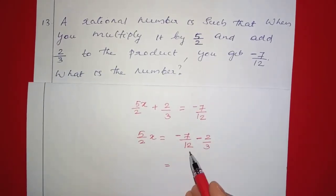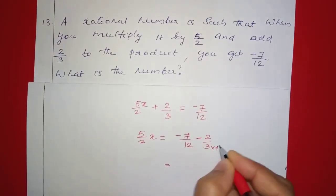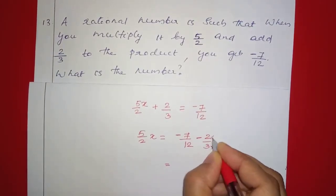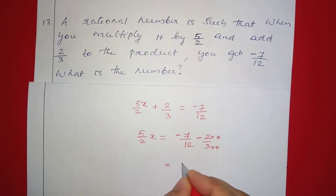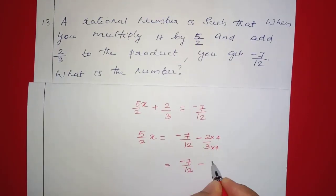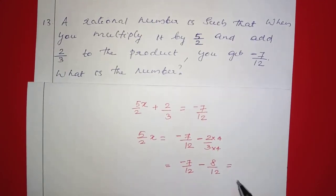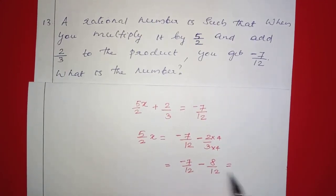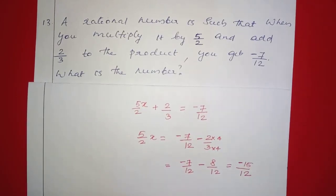We have different denominators, so we find a common denominator. 3 into 4 gives 12. The numerator becomes: negative 7/12 minus 2 times 4, which is 8/12. So negative 7 minus 8 gives negative 15, divided by 12.